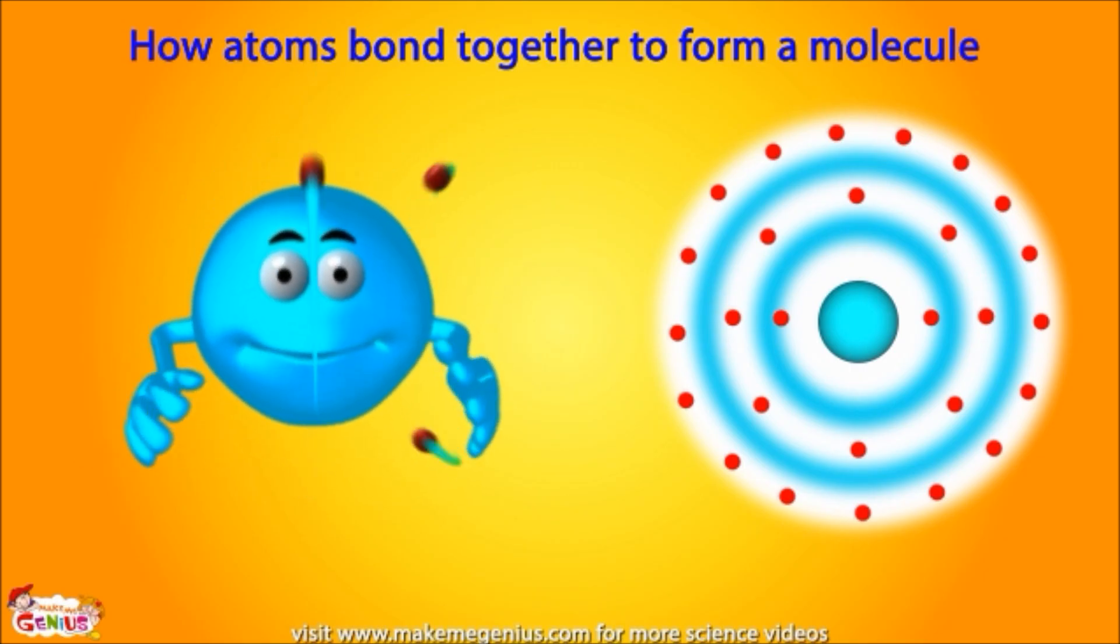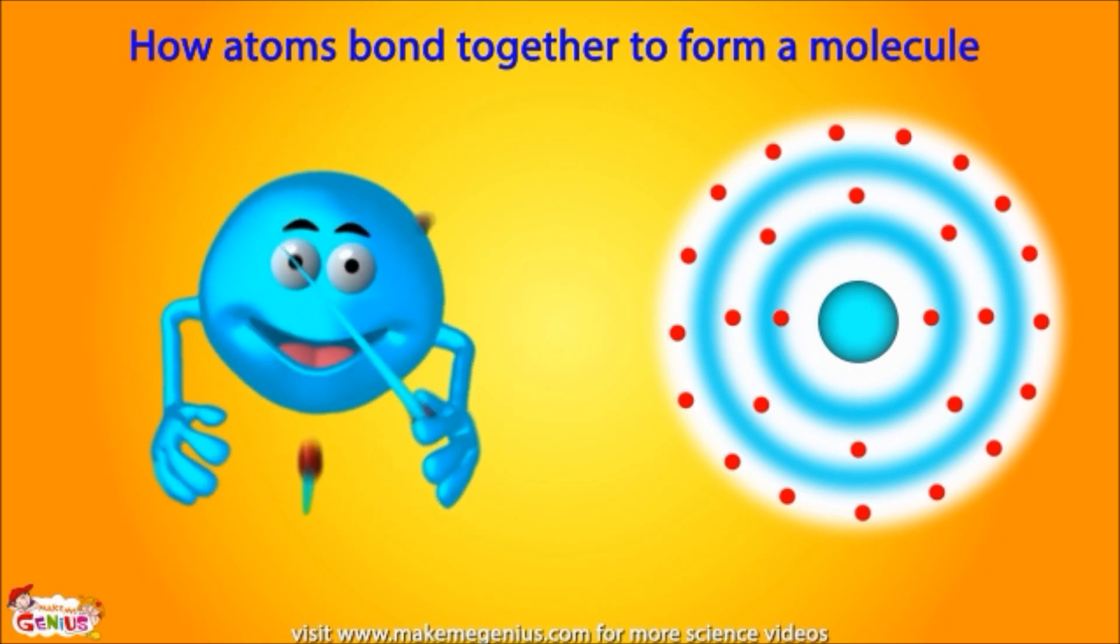Remember one thing, atoms always keep trying to fill their shells. Take for example an oxygen atom. In its second shell it can hold up to 8 electrons. But the oxygen atom only has 6 electrons in its second shell. So it is always looking for more electrons to fill its shell.